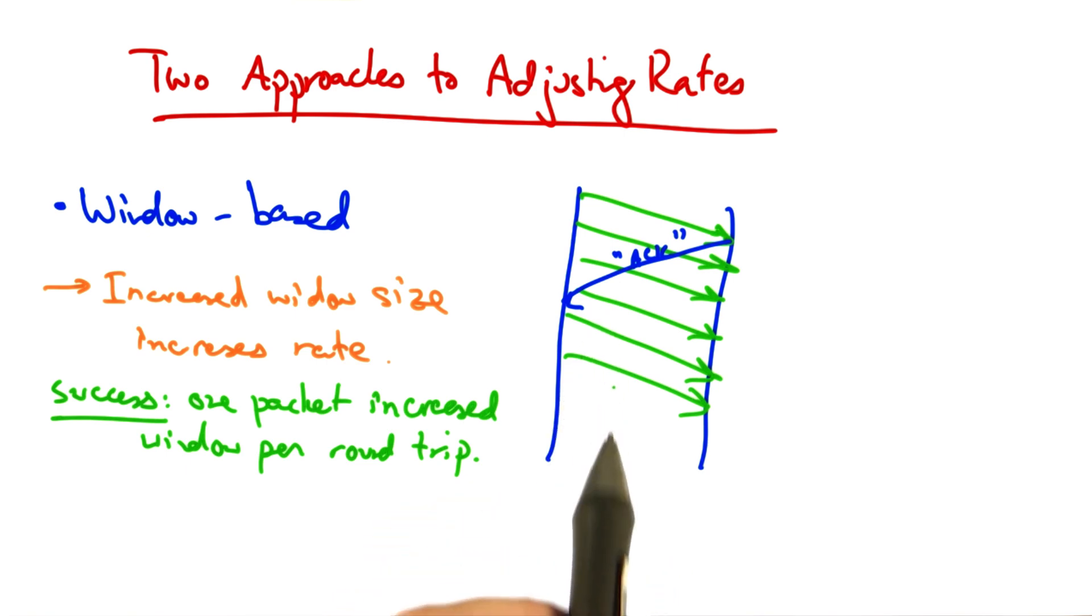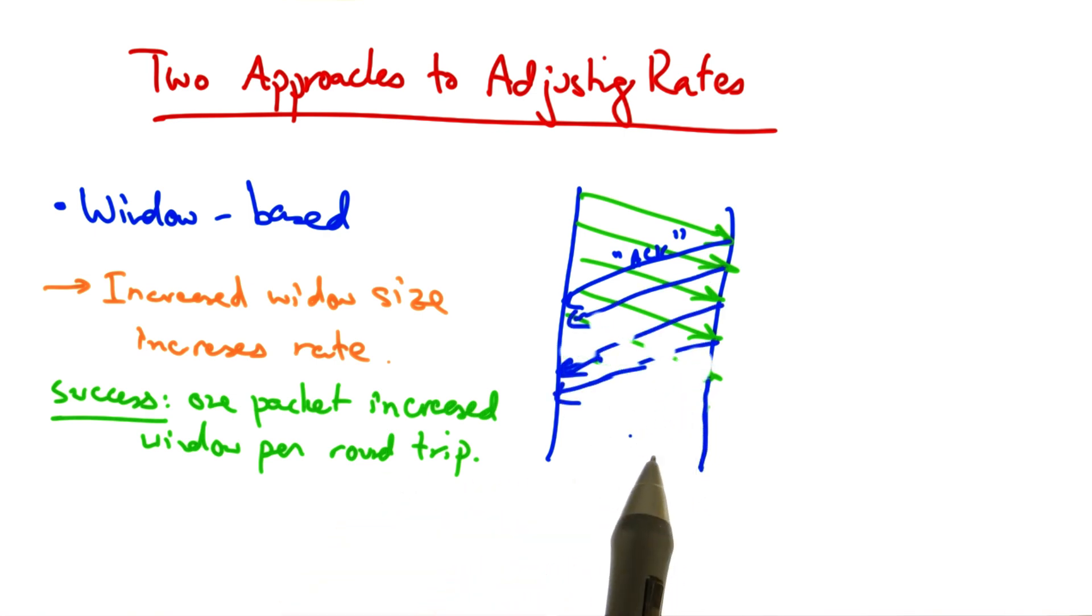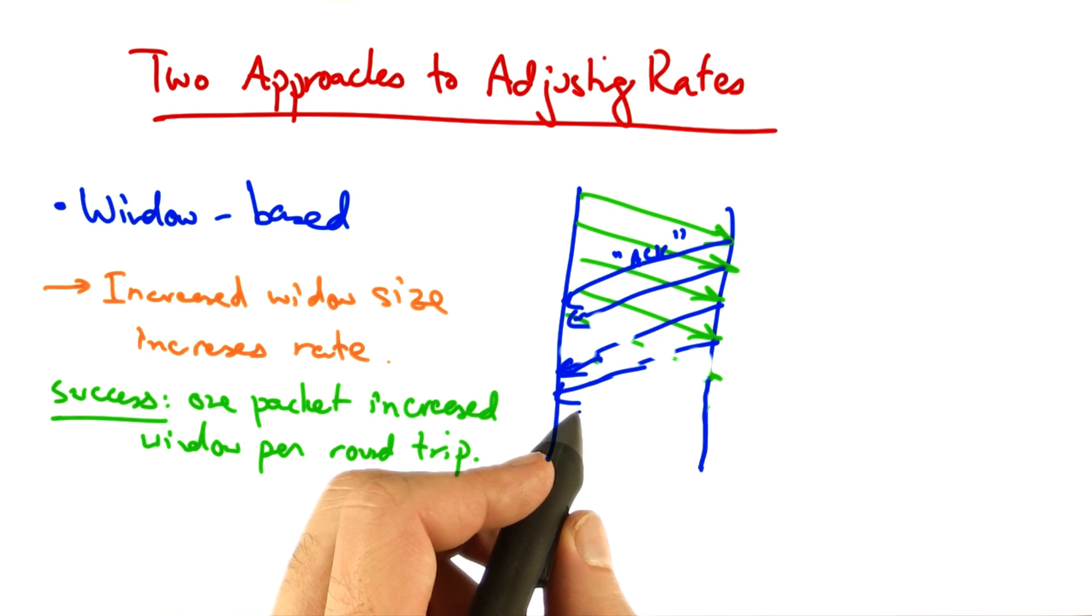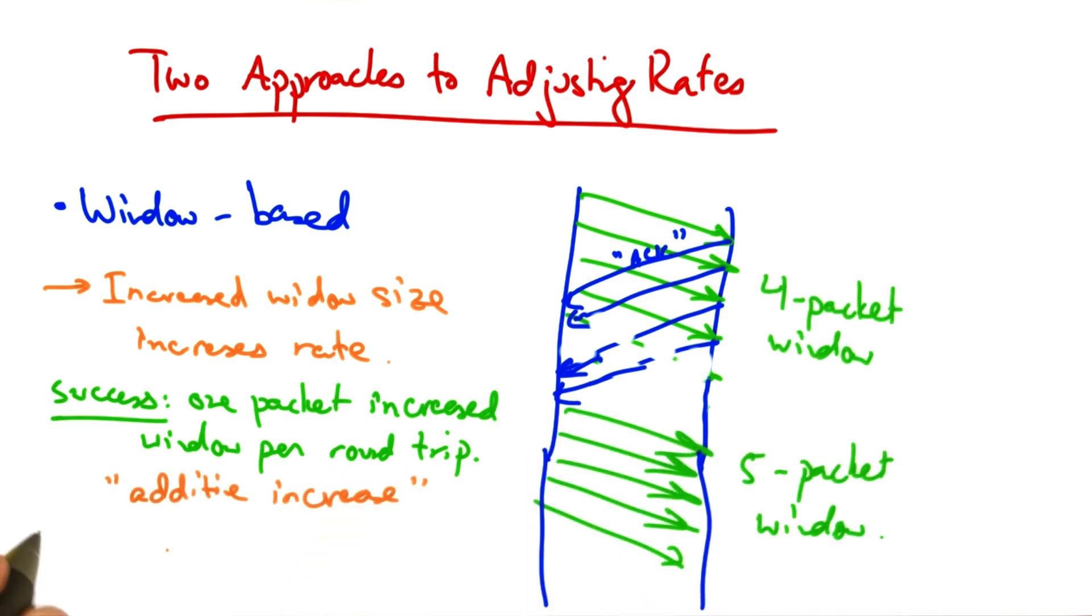Upon a successful receipt, we want the sender to increase its window by one packet per round trip. So for example, in this case, if the sender's window was initially four packets, then at the end of a single round trip's worth of sending, we want the next set of transmissions to allow five packets to be outstanding. This is called additive increase.